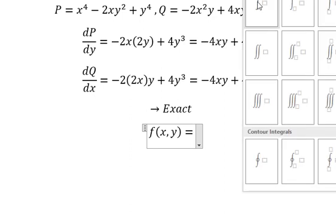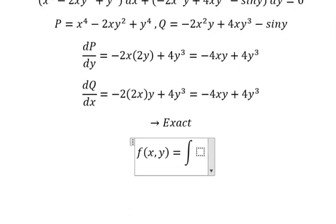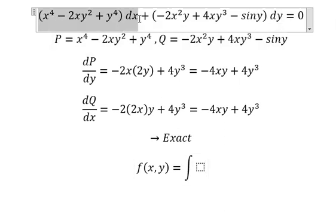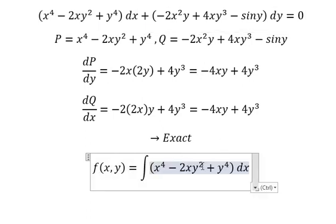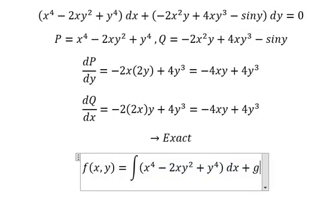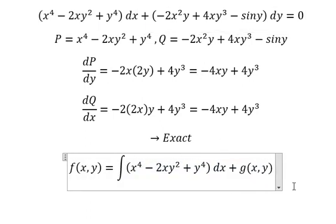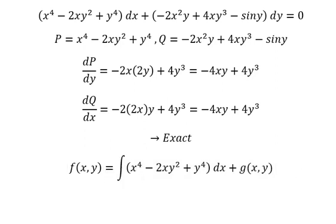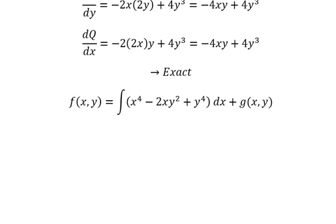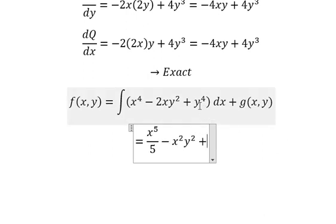We can select this one plus g(x,y). The integration of x⁴ is x⁵/5. This one is -x²y², this one is xy⁴ plus g(x,y).